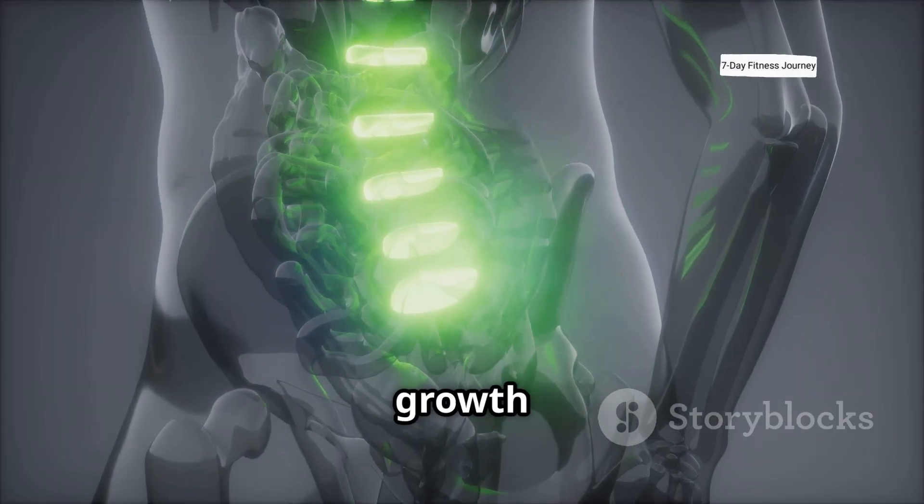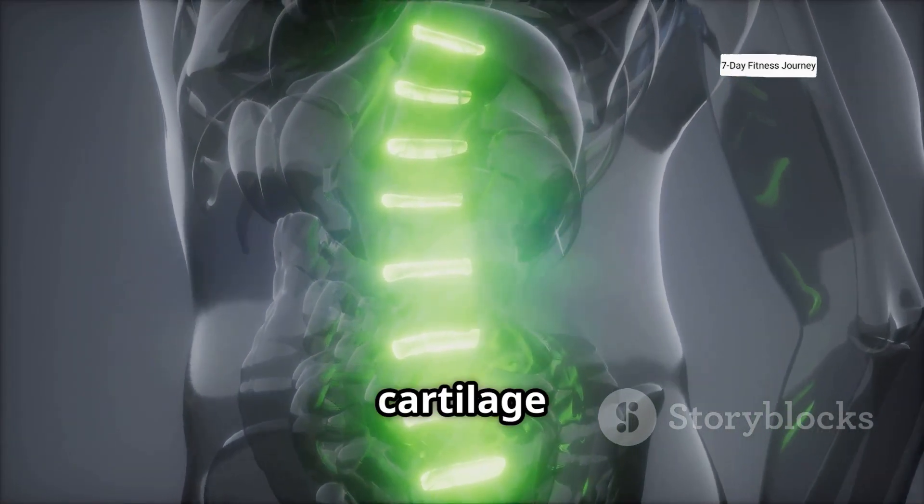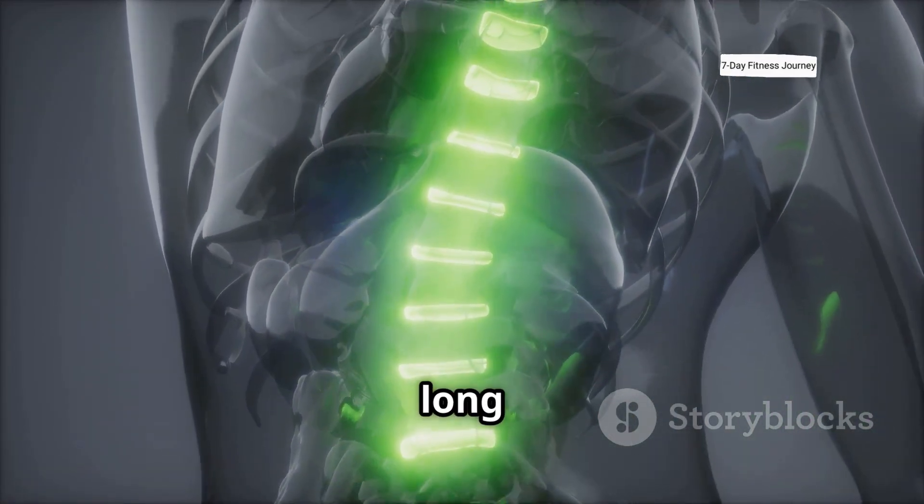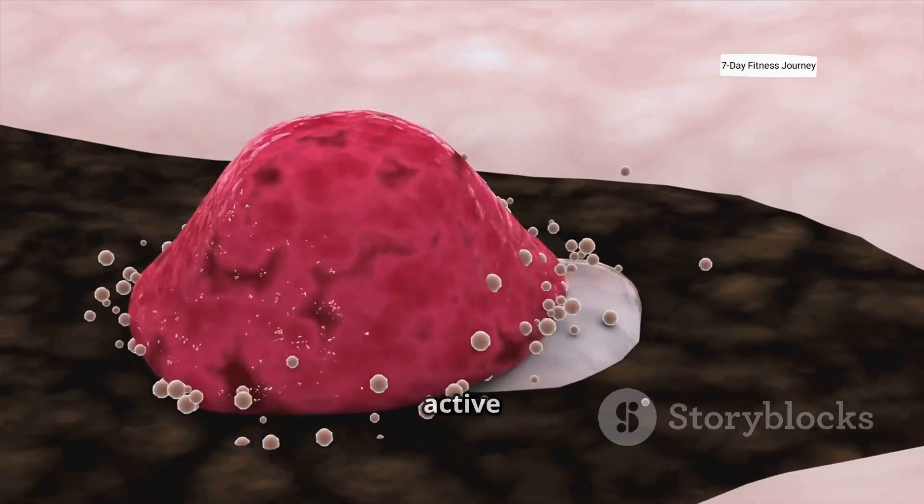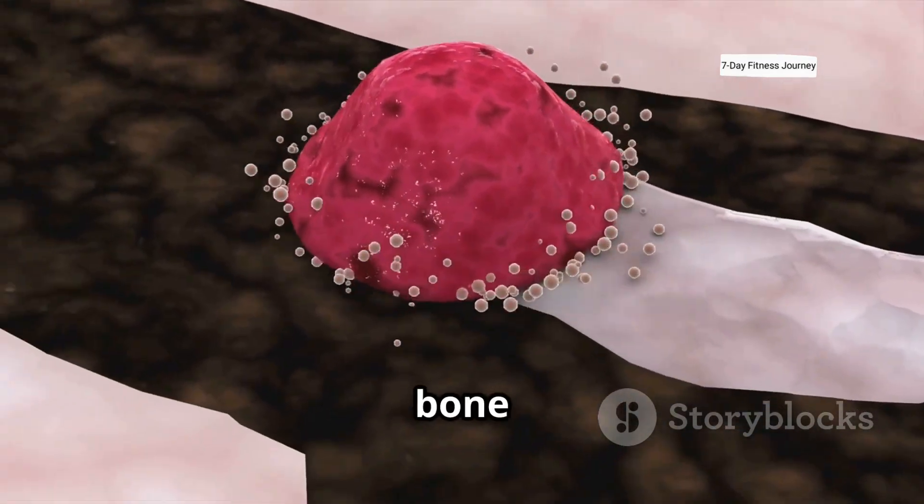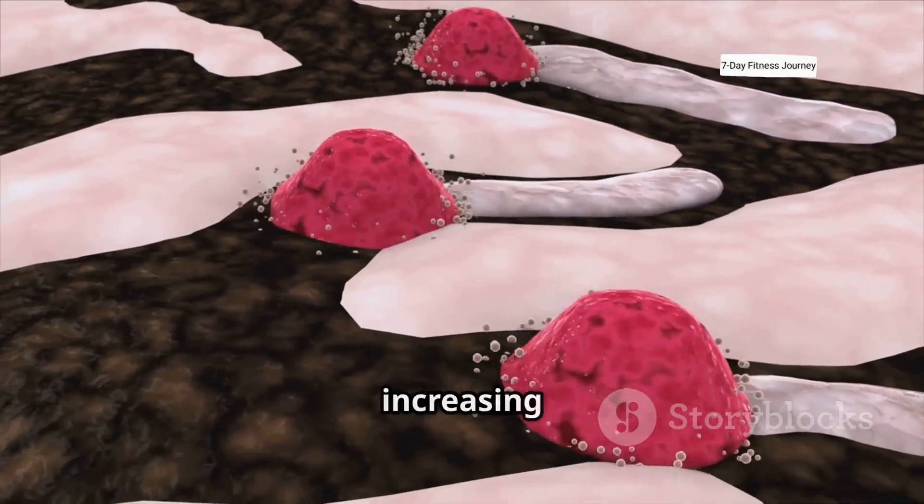These crucial growth plates, scientifically known as epiphyseal plates, are areas of cartilage located near the ends of your long bones, like those in your arms and legs. They are essentially the active construction zones where new bone tissue is generated, making your bones longer and in turn, increasing your height.